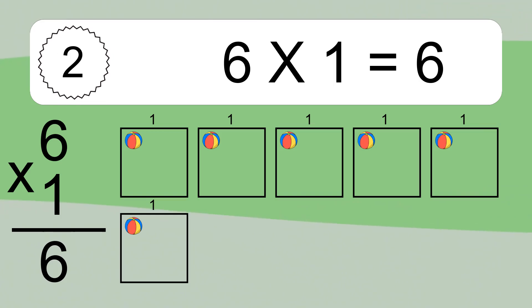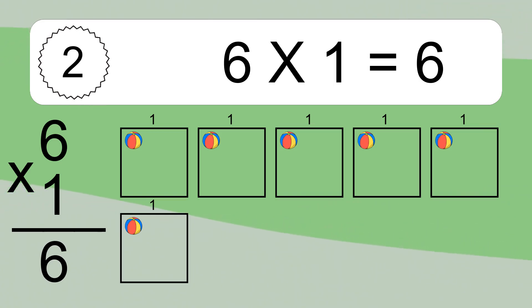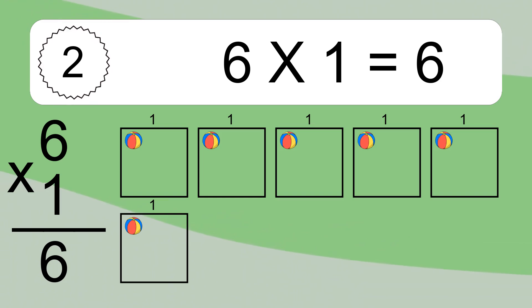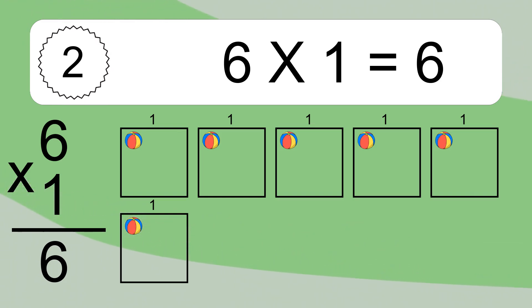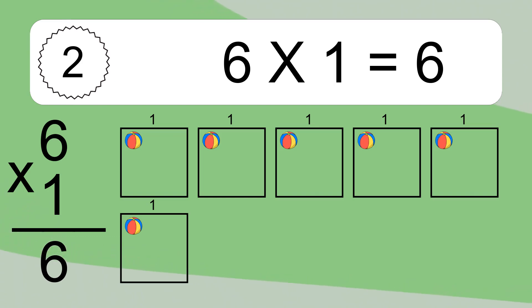We have 6 boxes, and each box has 1 colorful ball inside. If you count all the balls in all the boxes together, you will have 6 times 1 balls. This equals 6 balls.